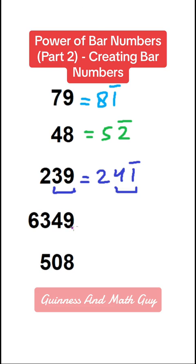And 6, 3, 4, 9 will become 6, 3, 5 bar 1 because this 49 becomes 5 bar 1 or 50 minus 1.